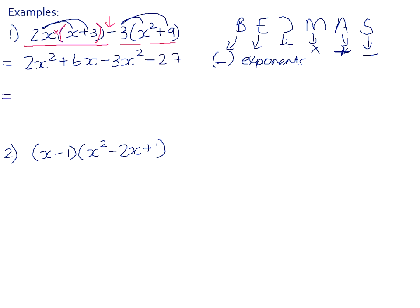We now have to collect any like terms together. The only like terms in this example are the x squareds. So 2x squared minus 3x squared is negative x squared, and positive 6x and negative 27 will stay as they are.